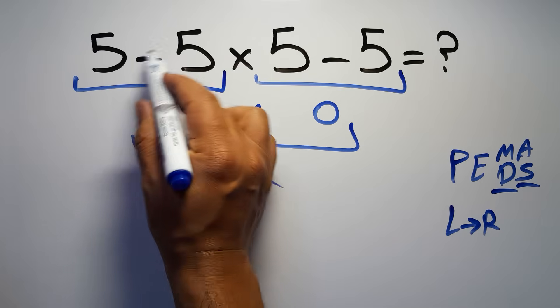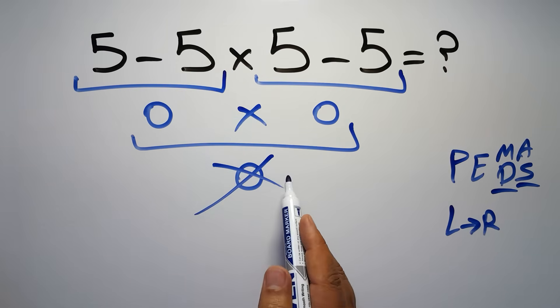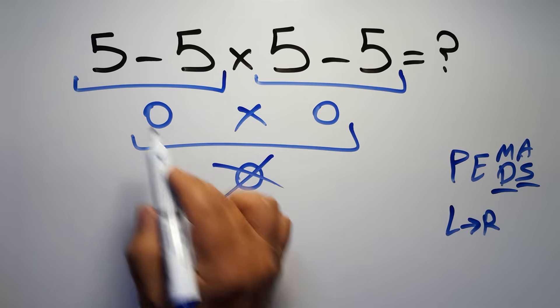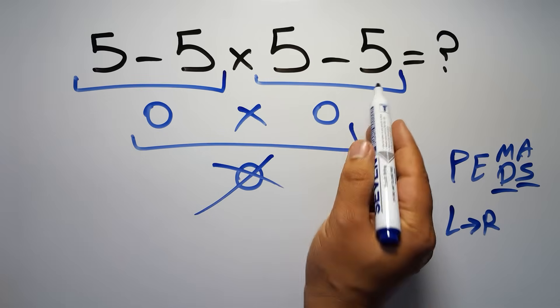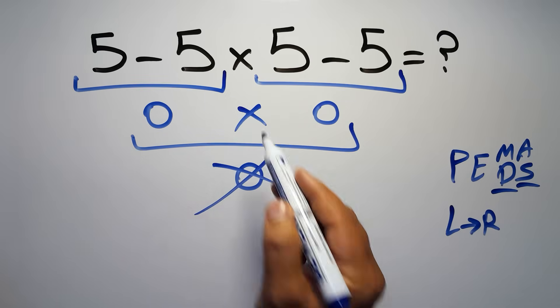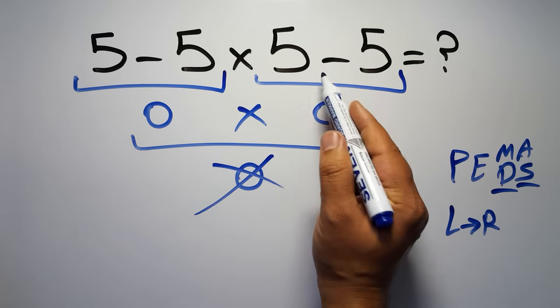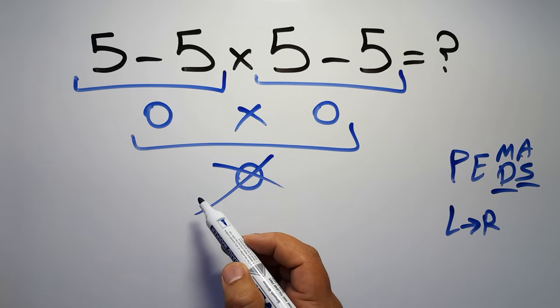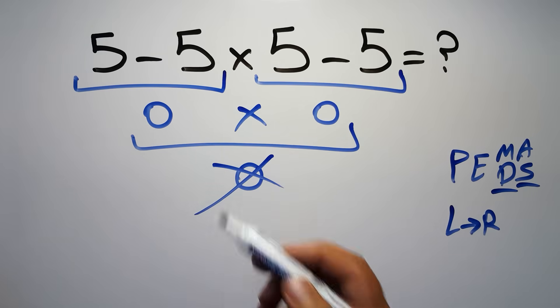In this expression, we have two subtractions and one multiplication. According to the PEMDAS, multiplication has higher priority than subtraction because multiplication comes before subtraction. So here, first we have to do this multiplication, then this subtraction, and finally this subtraction. If we do this subtraction or this subtraction before this multiplication, it is wrong.